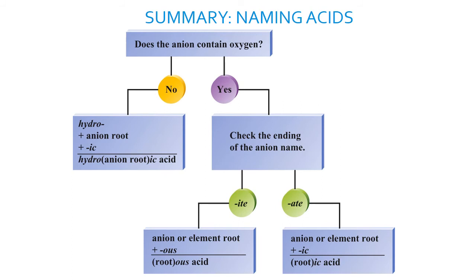In summary, how do you name acids? Does the acid contain oxygen? If no: start with the prefix hydro, add the anion root, followed by the suffix -ic. If yes: look at the ending of the anion name. If it ends with -ite, replace the -ite with -ous followed by the word acid. If it ends with -ate, replace the -ate with -ic followed by the word acid.